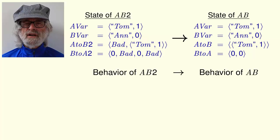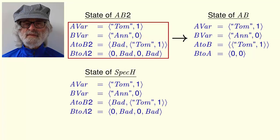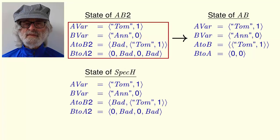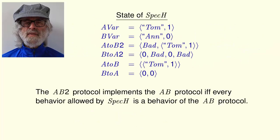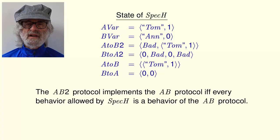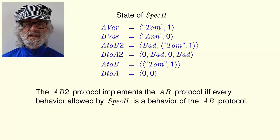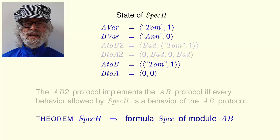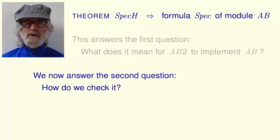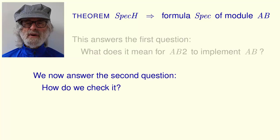To show this implementation, we first transform states of the AB2 protocol to produce behaviors satisfying a new specification spec H. We obtain a state of spec H by starting with a state of AB2 and then adding the values of the variables A to B and B to A from the state of AB. The AB2 protocol implements the AB protocol if and only if every behavior allowed by formula spec H is a behavior of the AB protocol. This condition is expressed by the theorem that formula spec H implies formula spec of module AB. This answers our first question — what does it mean for AB2 to implement AB? We now answer the second question: how do we check it?